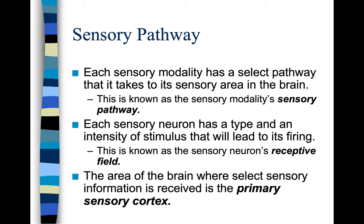Each sensory modality has a select pathway that it takes to its sensory area in the brain — this is known as the sensory modality's sensory pathway. Each sensory neuron has a type and intensity of stimulus that will lead to its firing, known as its receptive field. The area of the brain where select sensory information is received is the primary sensory cortex, and each different receptor has its own area of the brain that it affects.